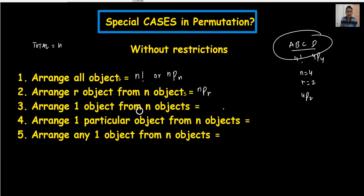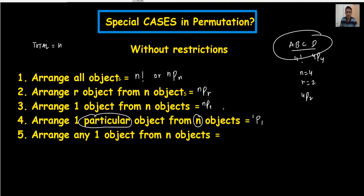Arranging one object from n objects: we write n P 1. This is very simple — like 4 P 1. Now, arranging one particular object from n objects is a little different: we write 1 P 1. One particular object is very important; even if the total numbers are whatever, we write 1 P 1. But arranging any one object from n objects, we write n P 1, meaning it could be a, b, c, or d — any one object, but only one.